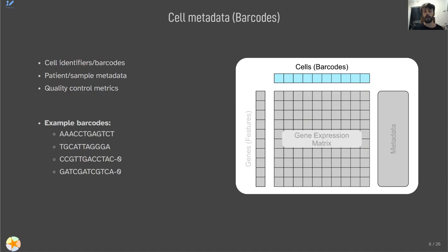Our next component is the cell metadata, commonly referred to as barcodes. This stores metadata about the cells, which may include cell identifiers or barcodes, as well as information about each individual cell such as where the cell came from — a specific patient or tissue sample — as well as quality control metrics generated by analysis tools. In this slide we can see some example barcodes, comprising the four main nucleotide letters, sometimes with additional information. If you see metadata that looks like that, chances are you're looking at the cell metadata.